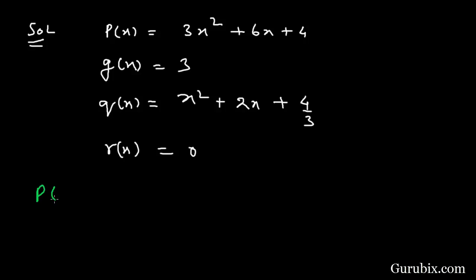We know that the division algorithm is: p(x), the dividend, equals g(x), the divisor, times q(x), the quotient, plus r(x). This is the division algorithm.